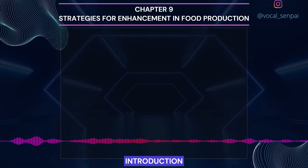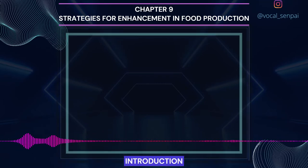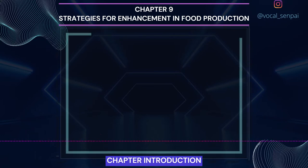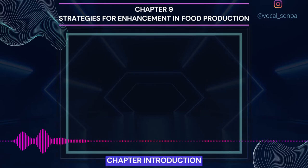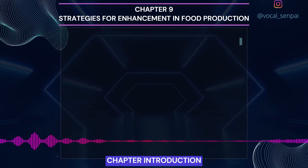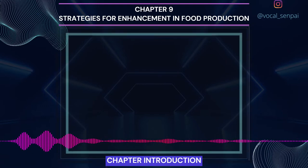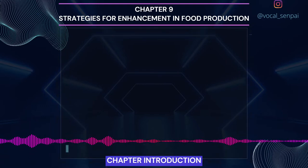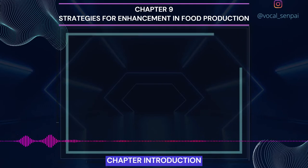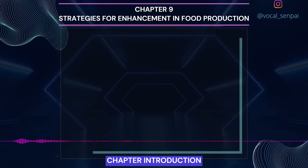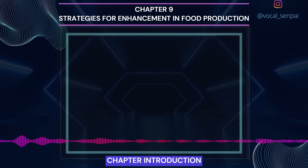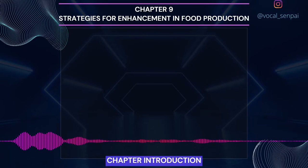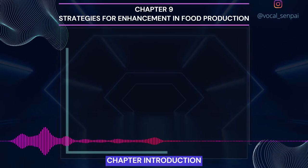So, sit back, relax, and let's listen and learn. Chapter 9: Strategies for Enhancement in Food Production. With ever-increasing population of the world, enhancement of food production is a major necessity. Biological principles as applied to animal husbandry and plant breeding have a major role in our efforts to increase food production.